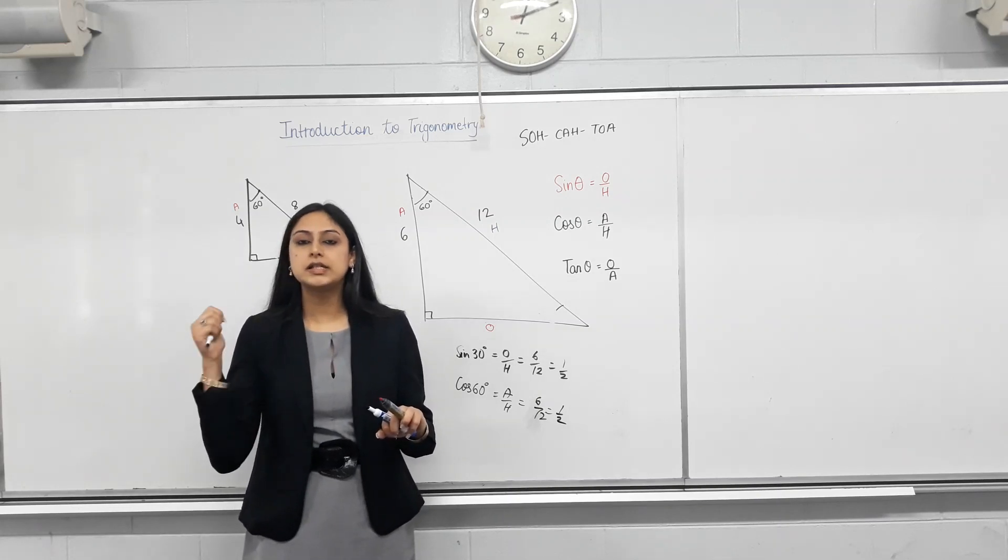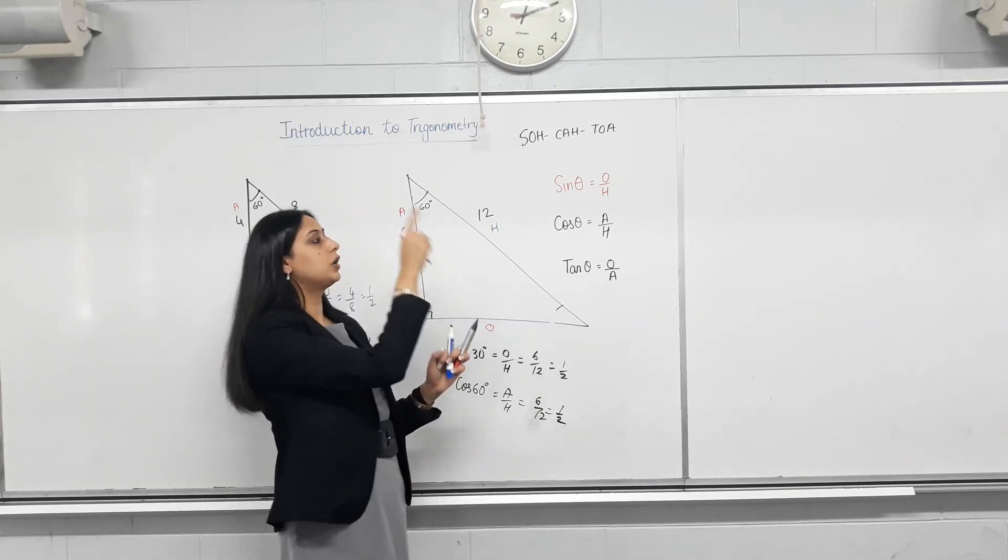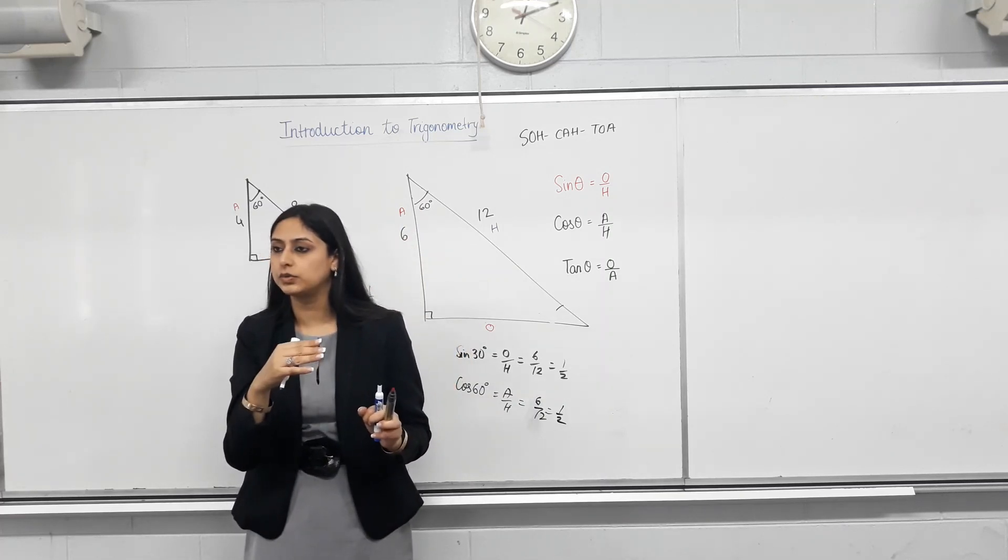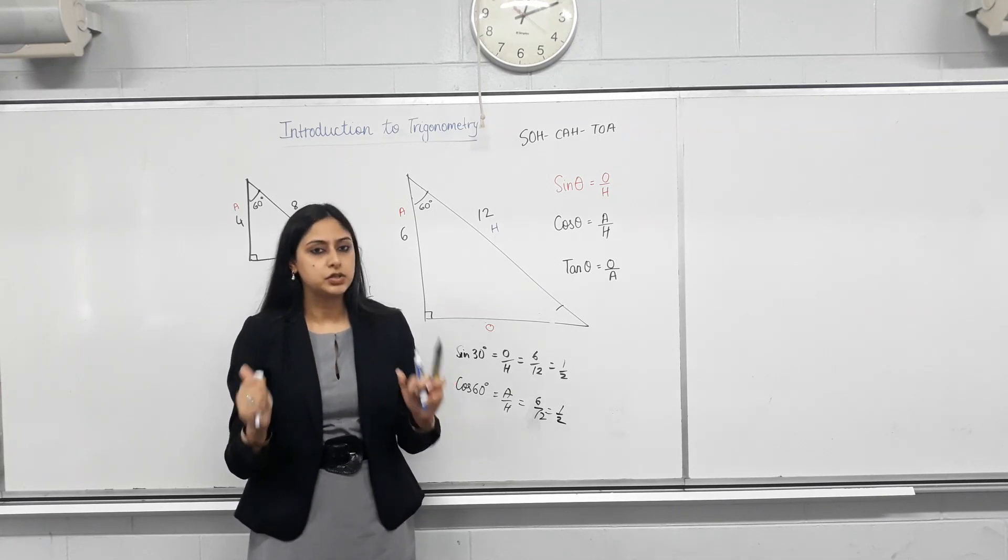Is this making some sense? So, the key words for today is linking the triangles and sop, cap, toa. So, tomorrow, everyone should know what sine is equal to, what cos is equal to, what tan is equal to. Is that clear? That's all. Exactly. Yeah.